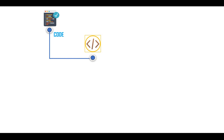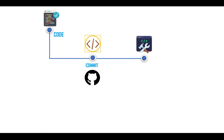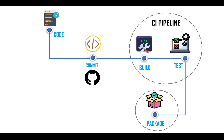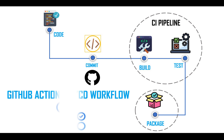Let me give you a pictorial representation of the workflow. You'll have the code where we make changes — we commit everything using Git commands — and once you do the git commit, we'll have a build of your Maven Java project. We'll also have testing as part of our workflow. The build and test will be the CI pipeline side, and then we'll also have the packaging part, where we get a JAR file or WAR file out of the Maven project.